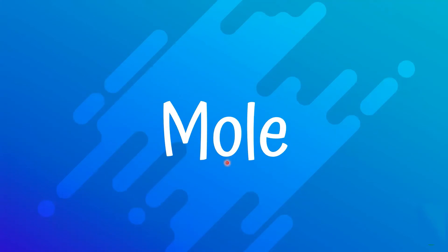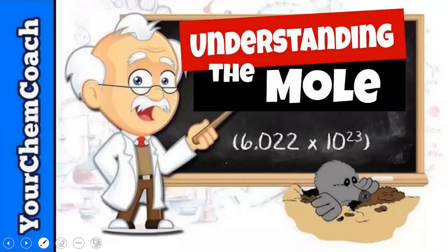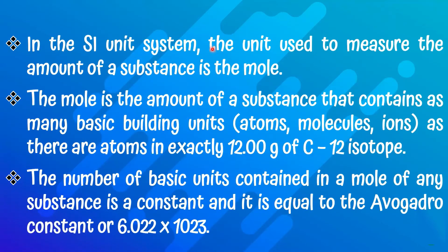Let's learn about the mole. In the SI unit system, the unit used to measure the amount of substance is the mole. The mole is the amount of substance that contains as many basic building units — atoms, molecules, or ions — as there are atoms in exactly 12 grams of carbon-12 isotope. The number of basic units in one mole of any substance equals the Avogadro constant: 6.022 × 10²³.